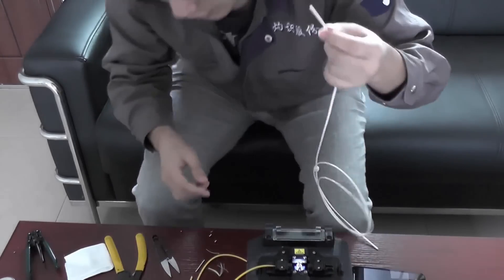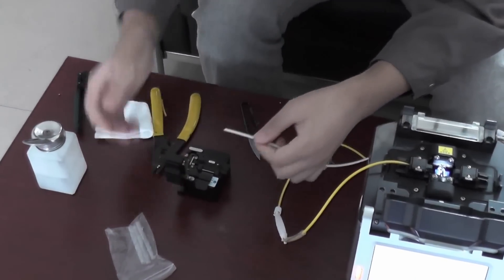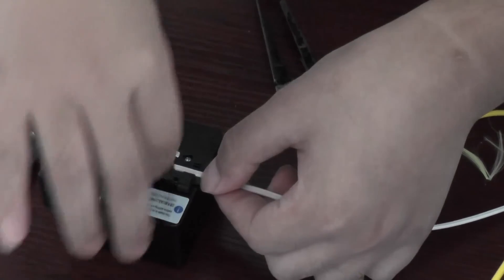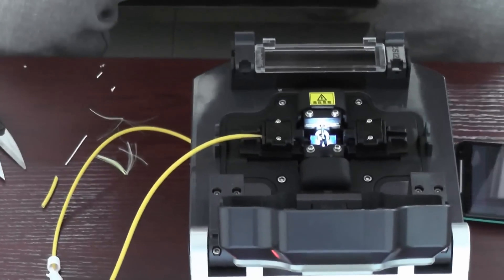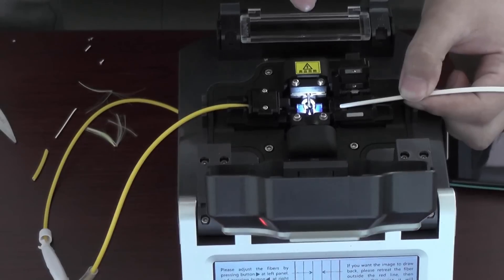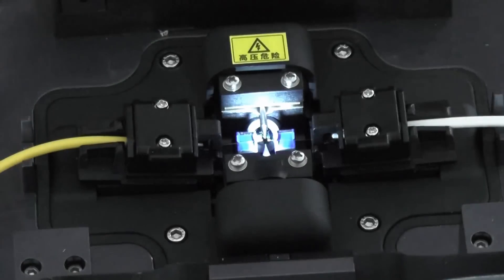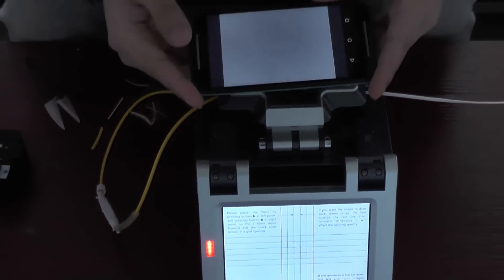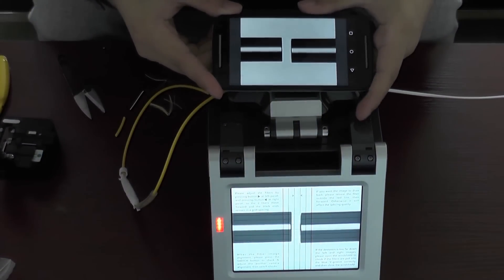It's thin, we should put it between 15 to 18, same to the jump fiber. Now I put it in about 17. Put it in the blue groove, and don't beyond the electrodes. Now we just need to close the lid. We will see, it's automatic.